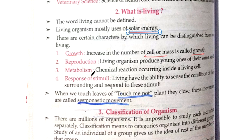The fourth characteristic is response to stimuli. Living beings have the sense to perceive their surrounding conditions and respond to stimuli. For example, in human beings, when there is a fall in temperature, our body automatically starts to shiver so that heat can be generated in the body to tackle the decreasing temperature outside.